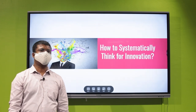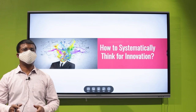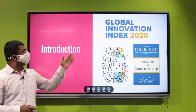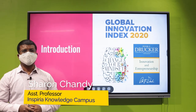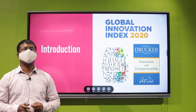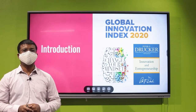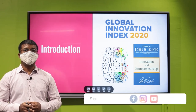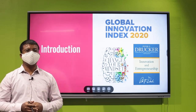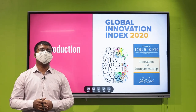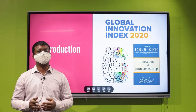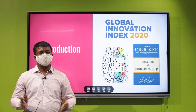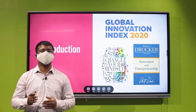Hello viewers, welcome to this session on entrepreneurship and innovation. Today the topic before us is how to systematically think of innovation. Looking at the Global Innovation Index 2020, India stands at rank 48, whereas China is at rank 14. Though demographically India is more advantageous than China, it means we as a country need to think more innovatively. In our pedagogy and lessons in entrepreneurship, we have come across the term entrepreneurial mindset.